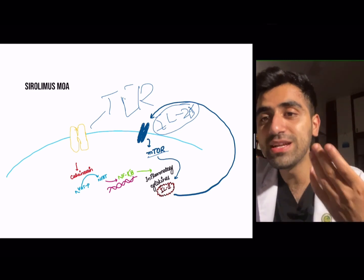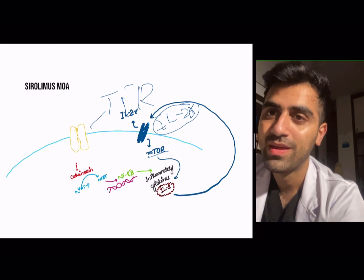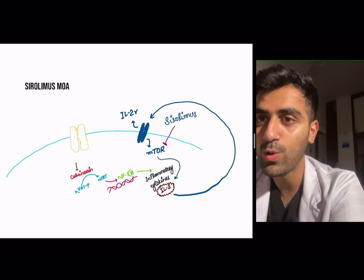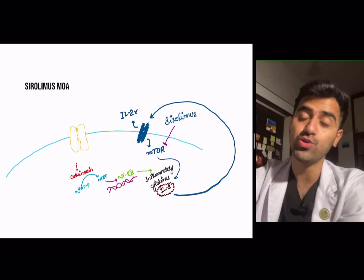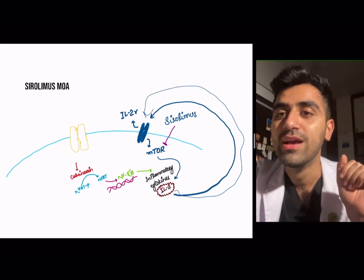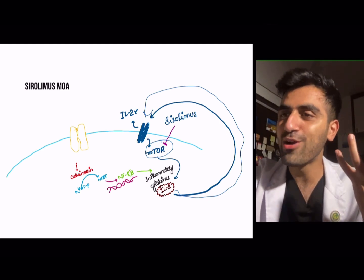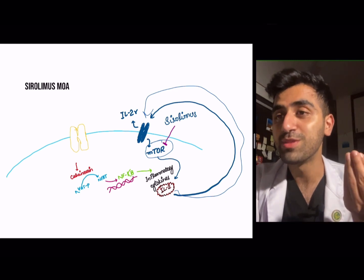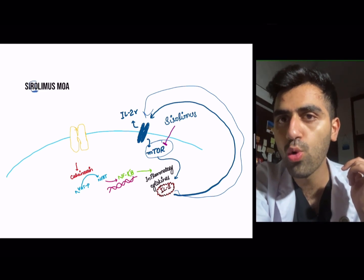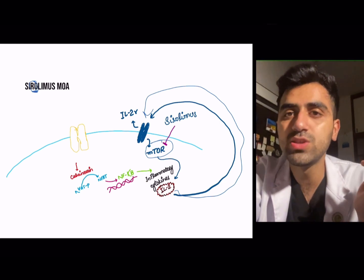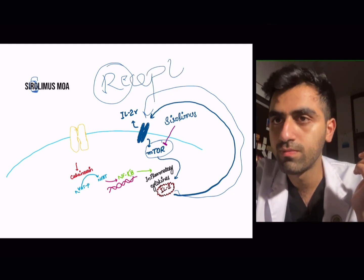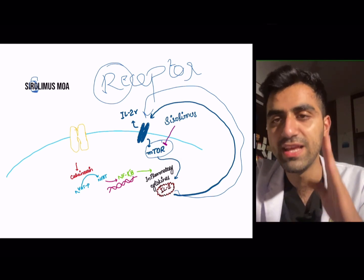mTOR further leads to the transcription of IL-2. Sirolimus deactivates mTOR. When IL-2 is released, it binds to the IL-2 receptor, activating the mTOR signaling pathway, and sirolimus blocks mTOR. A memory hook: sirolimus has 'ro' in it, like mTOR — or think of the big 'R' in 'syro,' so it blocks the R receptor.